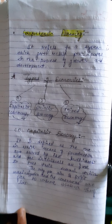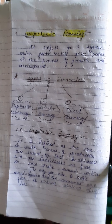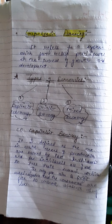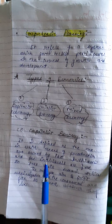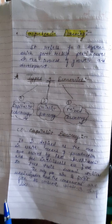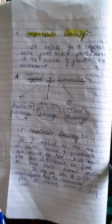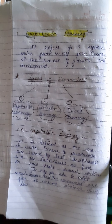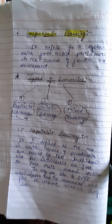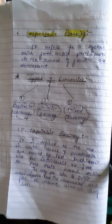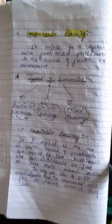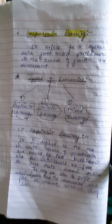Now, the types of economies: first is the capitalist economy. In a capitalist economy, the means of production are privately owned and individuals are free to take their own economic decisions as guided by the principle of profit maximization. Consumers are free to consume whatever they like. Features include: private ownership of means of production, profit maximization, and the role of government is largely confined to the maintenance of law and order and defense of the country.